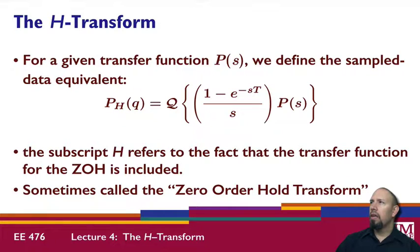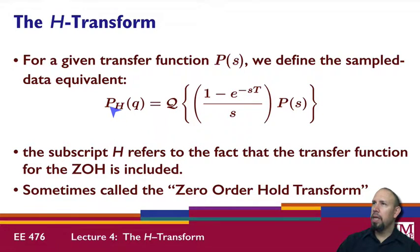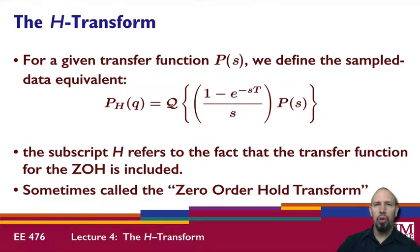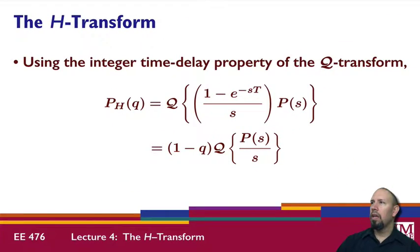For a given transfer function, we define P subscript H of Q — the Q transform of the ZOH cascaded with the plant. The subscript H refers to the fact that the transfer function for the zero order hold is included. This is sometimes called the zero order hold transform.